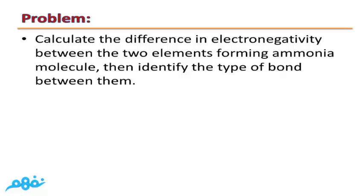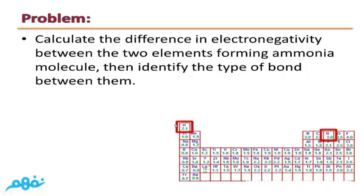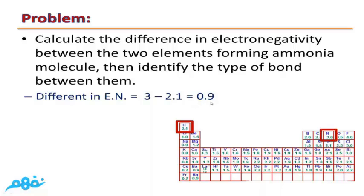Problem: Calculate the difference in electronegativity between the two elements forming the ammonia molecule, then identify the type of bond between them. The chemical formula for ammonia is NH₃, so we calculate the difference in electronegativity between hydrogen and nitrogen. The difference is 3 minus 2.1, which equals 0.9. Since 0.9 is relatively high, ammonia is considered a polar covalent compound, and the bond between nitrogen and hydrogen is a polar covalent bond.